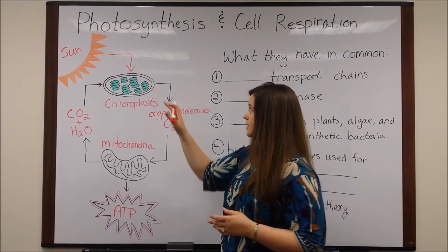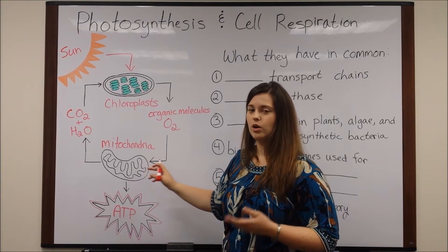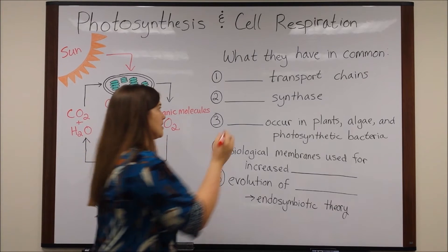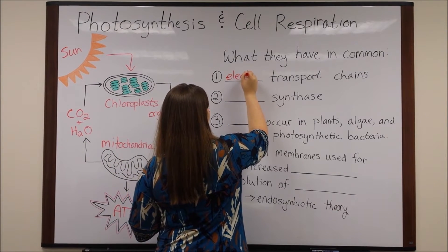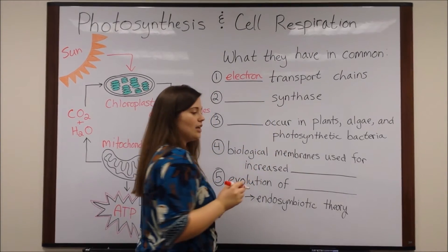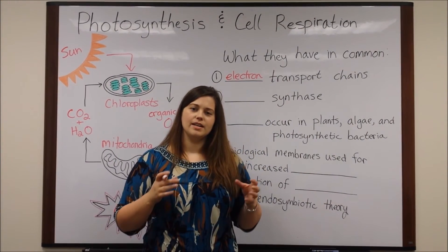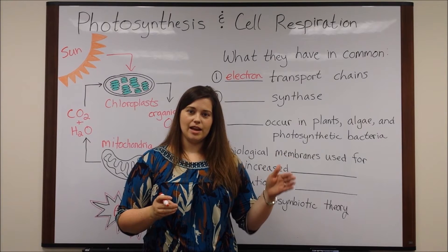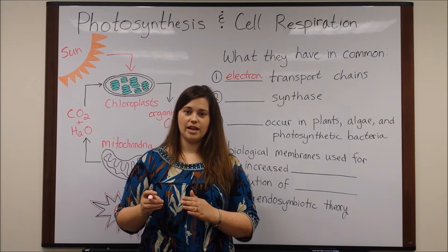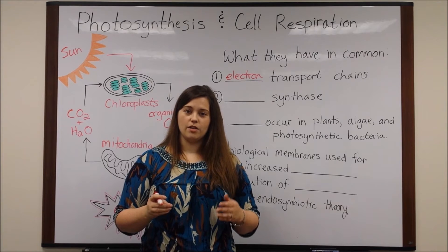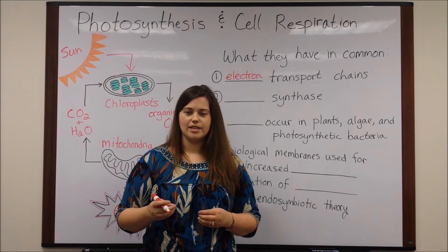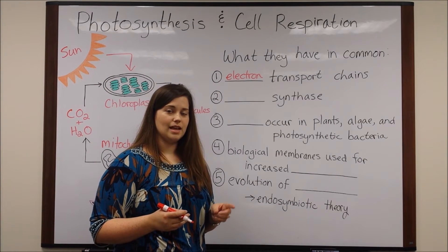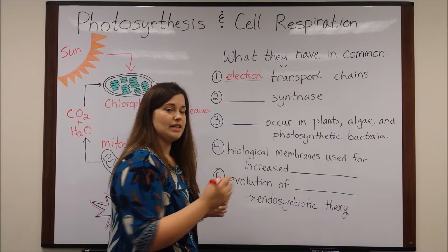Now let's look at what photosynthesis and cell respiration have in common. Well, they both use electron transport chains. Electron transport chains are these series of enzymes that are part of biological membranes that pass electrons from place to place within that chain. And in so doing, they harvest energy from those electrons and create something called a proton gradient. The proton gradient is then used in both photosynthesis and cell respiration by ATP synthase.